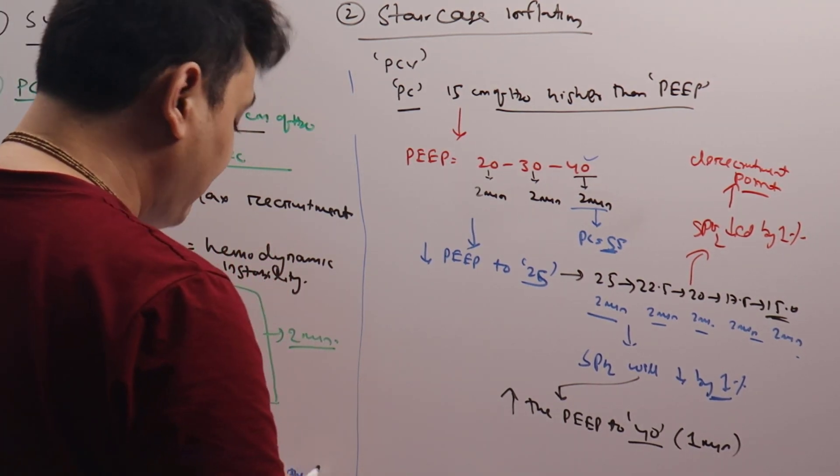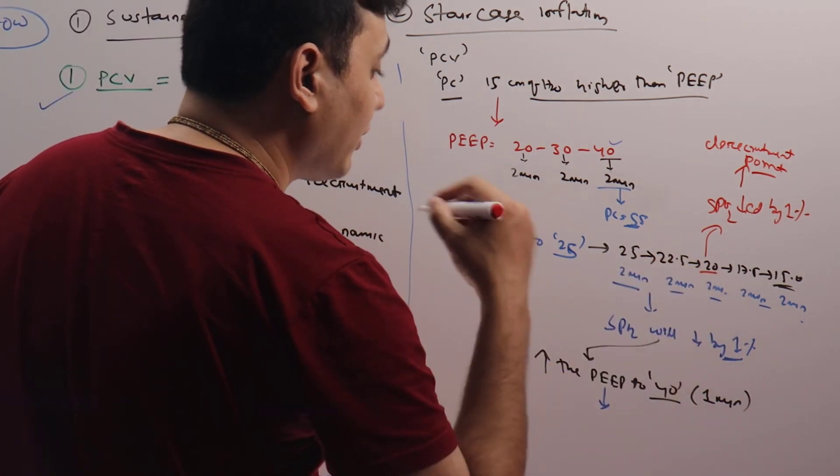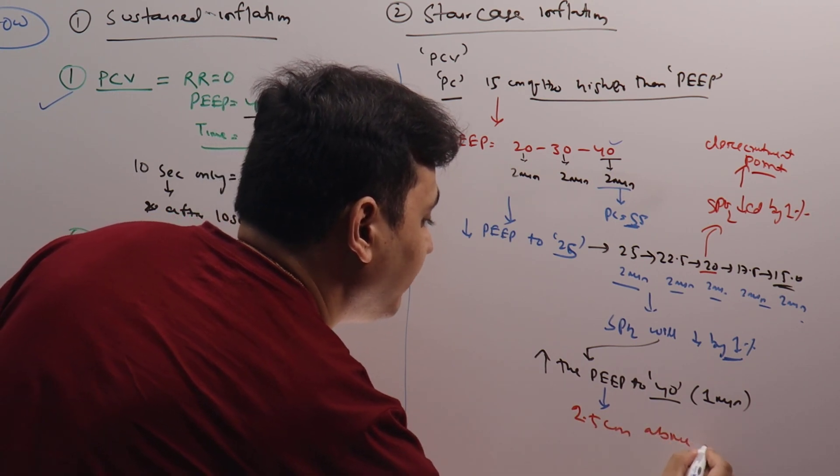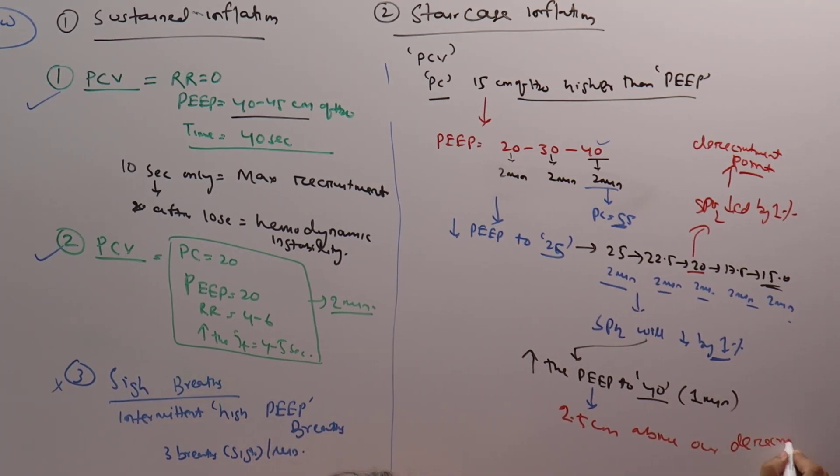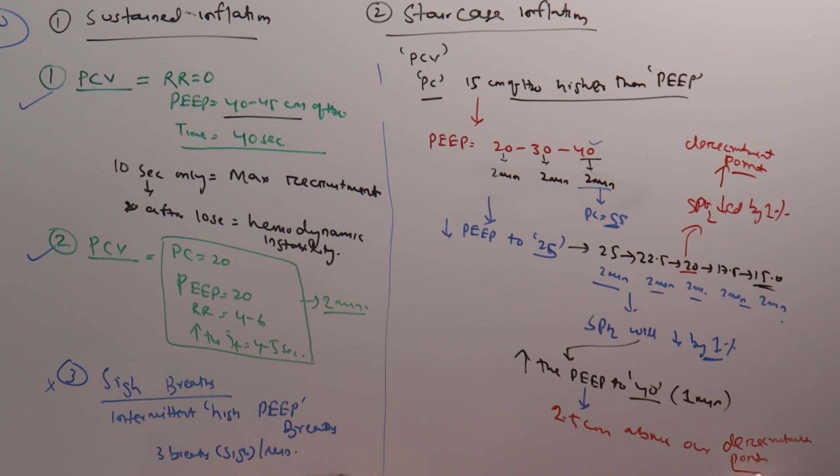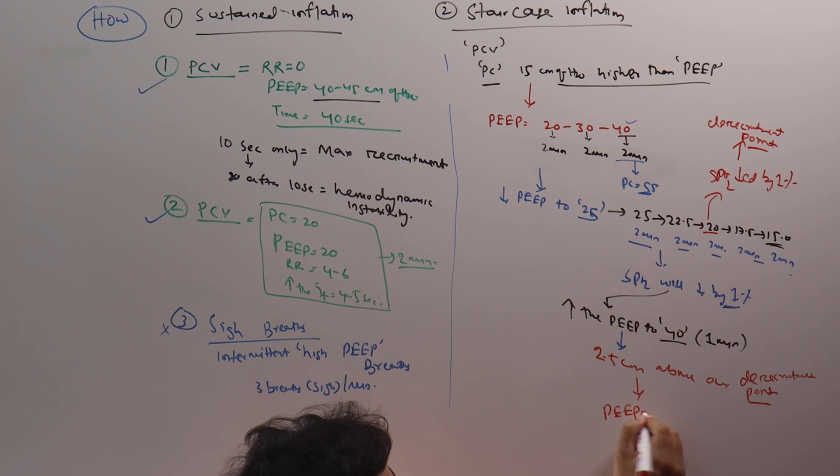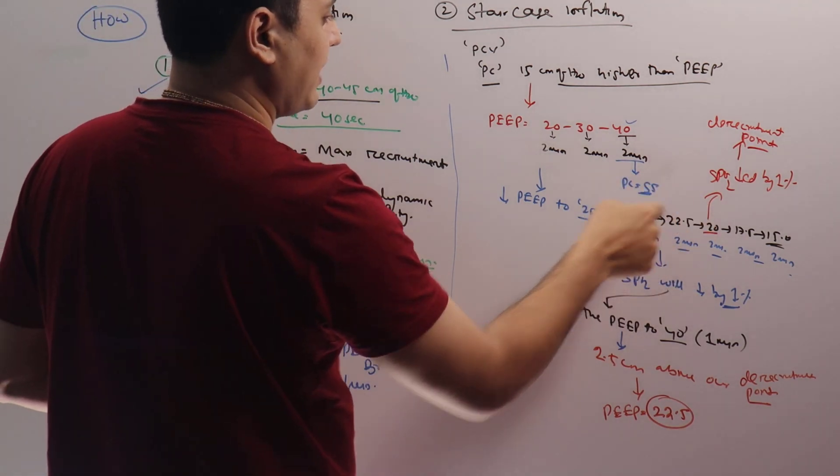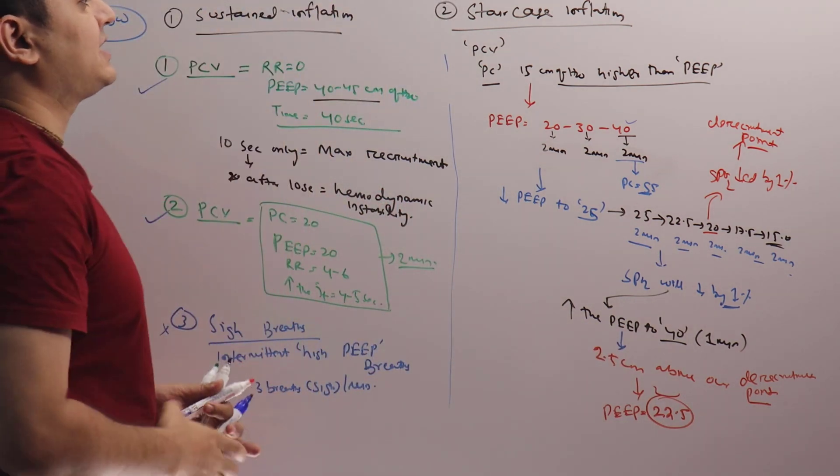Then what is the final PEEP for our patient? Because you have seen it is derecruiting at 20, you have to keep 2.5 cm above our derecruitment point. So PEEP for this patient, the final PEEP will be 22.5. This is called the staircase inflation method.